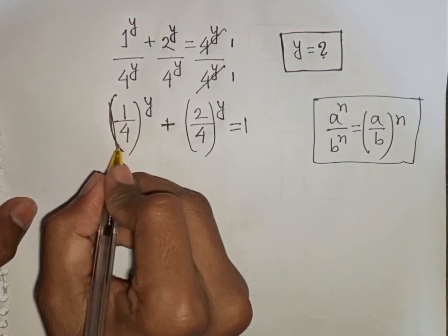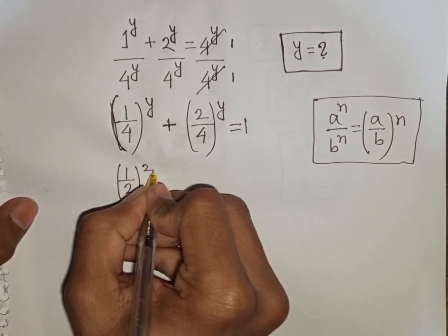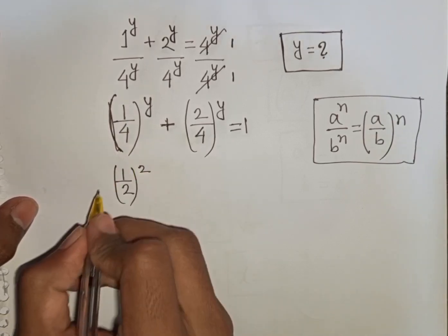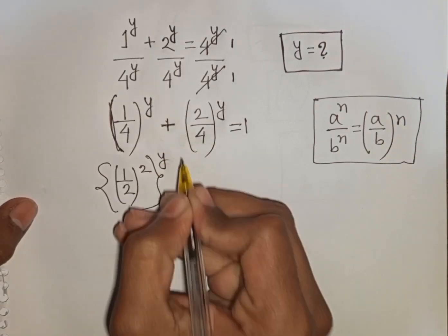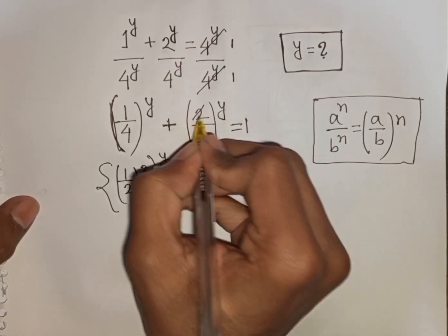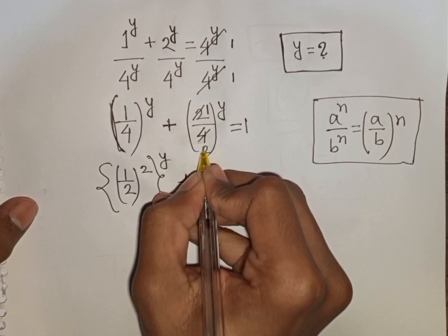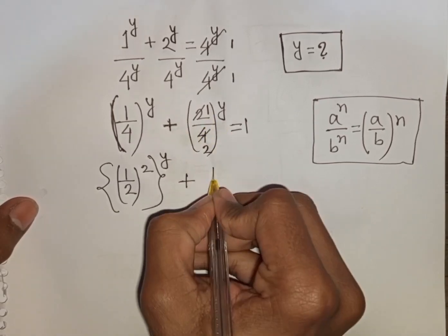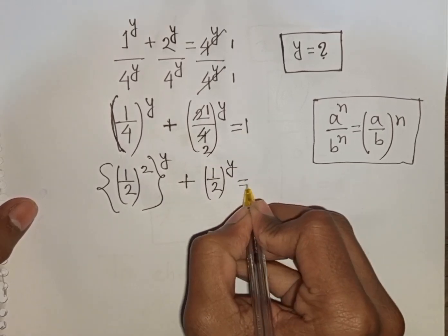Now 1 over 4 can be written as (1 over 2) squared, since 1 squared is 1 and 2 squared is 4. Then this first bracket can be written as (1 over 2) power 2, then power y. Also 2 divided by 4 is 1 over 2. So we have (1 over 2) power y, power y, equal to 1.